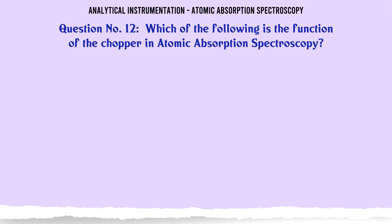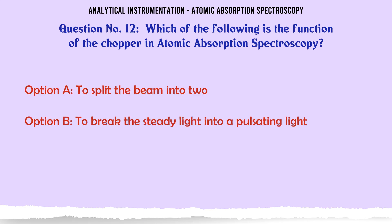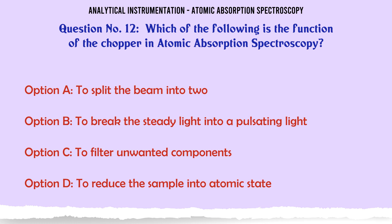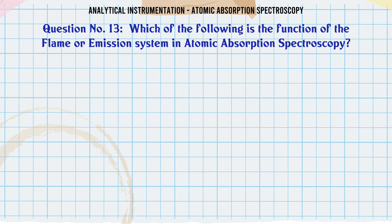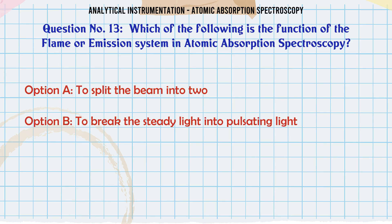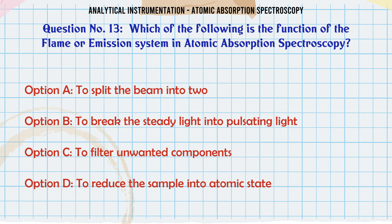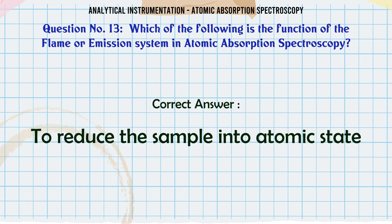Which of the following is the function of the chopper in atomic absorption spectroscopy? A. To split the beam into two. B. To break the steady light into a pulsating light. C. To filter unwanted components. D. To reduce the sample into atomic state. The correct answer is: to break the steady light into a pulsating light.